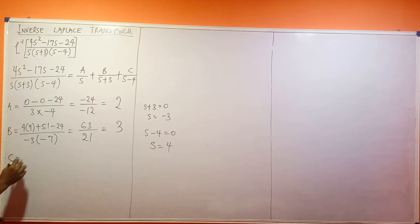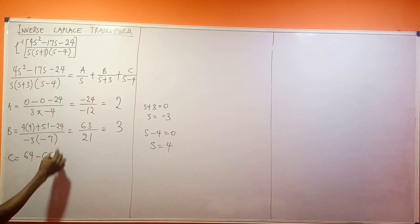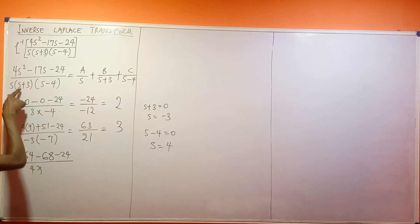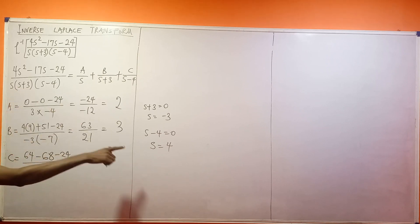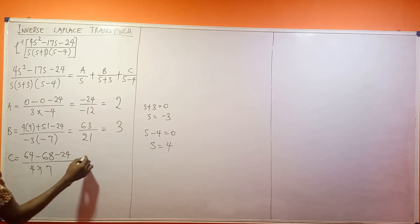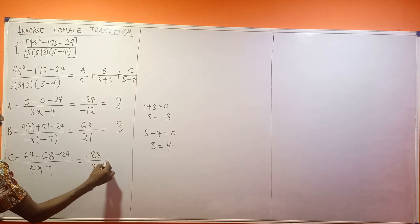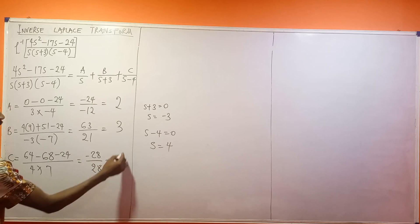Then minus 17 times 4 will give me 68, then minus 24, divided by s is 4, so this is 4 times 4 plus 3, which gives me 7. So this would then become 64 minus 68, which is minus 4, minus 4 minus 24 is minus 28, divided by 4 times 7 is 28. So the answer is minus 1.